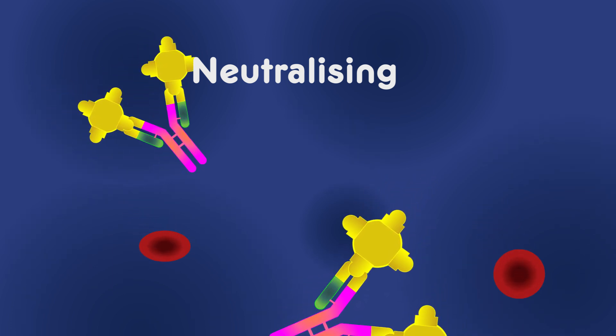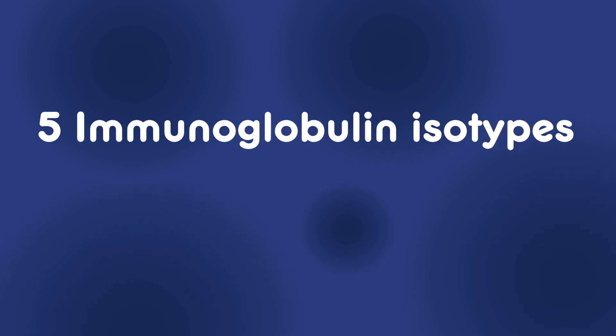In mammals, there are five immunoglobulin isotopes. They perform different roles and help direct the appropriate immune response for each different type of foreign invader.